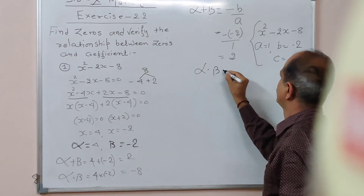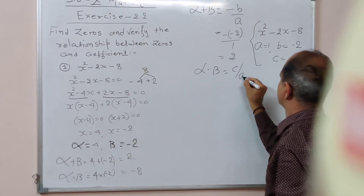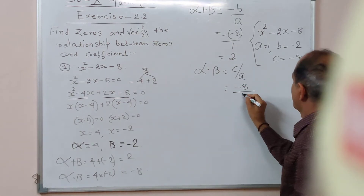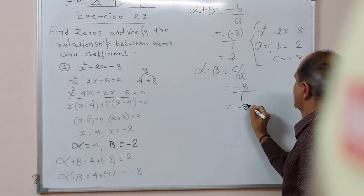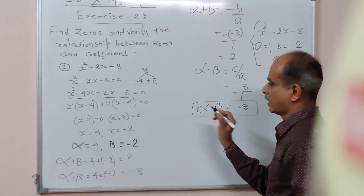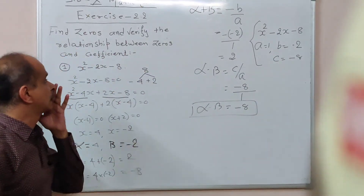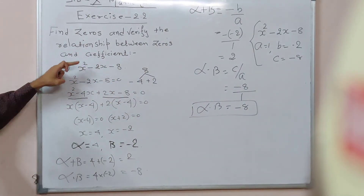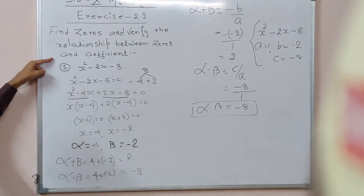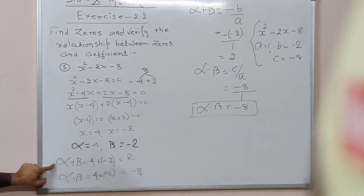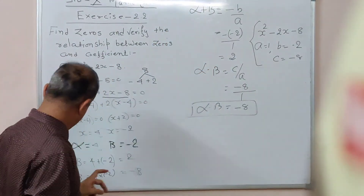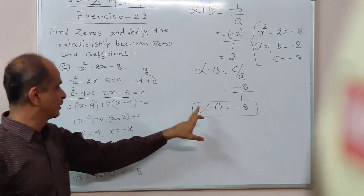Now, alpha into beta — the formula is c by a. Here c is minus 8 and a is 1, so you get minus 8. Therefore alpha into beta equals minus 8. So in the first example, we found the zeros and verified the zeros and coefficients. Alpha plus beta equals 2, which matches the formula result of 2. Alpha into beta equals minus 8, which also matches the formula result of minus 8. Both relations are verified.